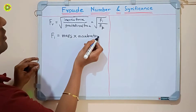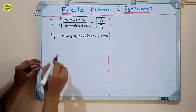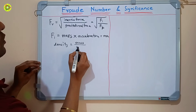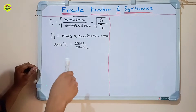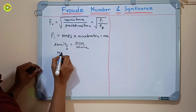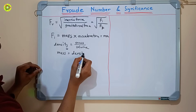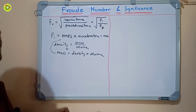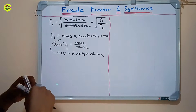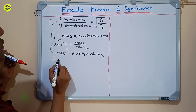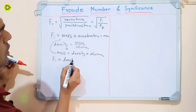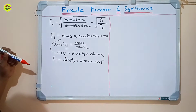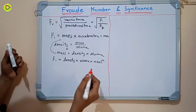Inertia force Fi is given by mass into acceleration, that is ma. As we know, density equals mass upon volume, so mass equals density into volume. Putting this mass value into the equation, Fi becomes density into volume into acceleration.